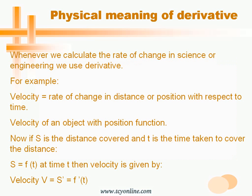Let's see the physical meaning of derivatives. A derivative is a measure of how a function changes when the values of its input change. For example, velocity is nothing but the rate of change of position with respect to time. If s is the distance covered in time t, then velocity is given by the derivative of distance with respect to time.